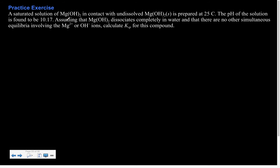Let's do a practice problem. A saturated solution of magnesium hydroxide in contact with undissolved Mg(OH)₂ — the significance of that part is that it tells us we have an equilibrium situation, because we have to have all components present for an equilibrium condition. The pH of the solution is found to be 10.17. Assuming magnesium hydroxide dissociates completely in water and there are no other simultaneous equilibria involving magnesium or hydroxide, calculate Ksp. All of the ions come from magnesium hydroxide, so there is no other source of magnesium or hydroxide ions.